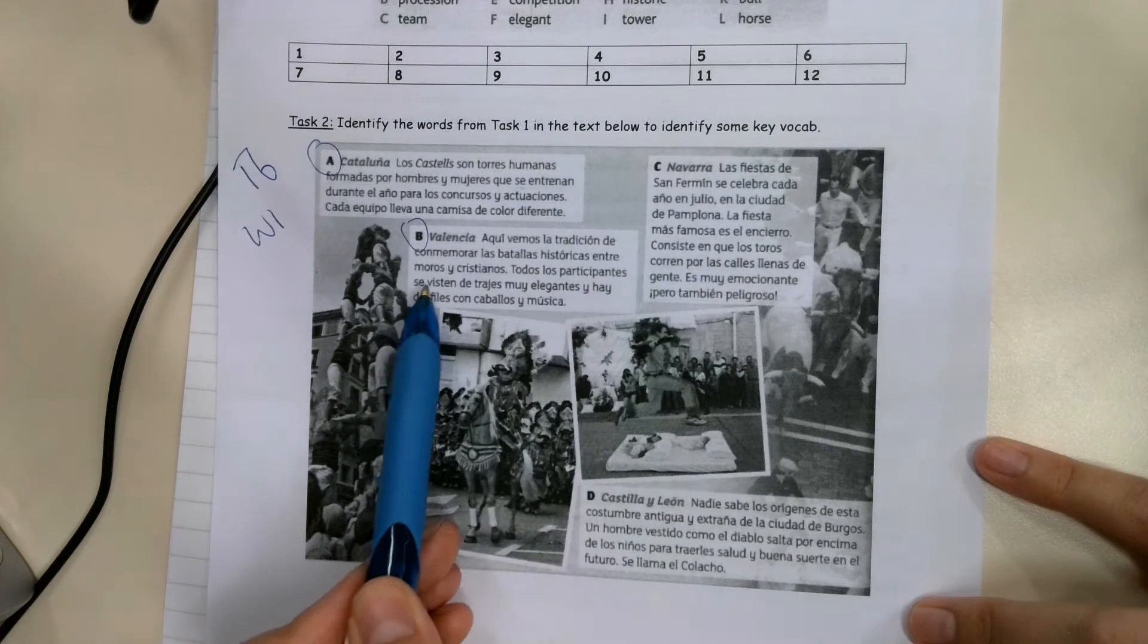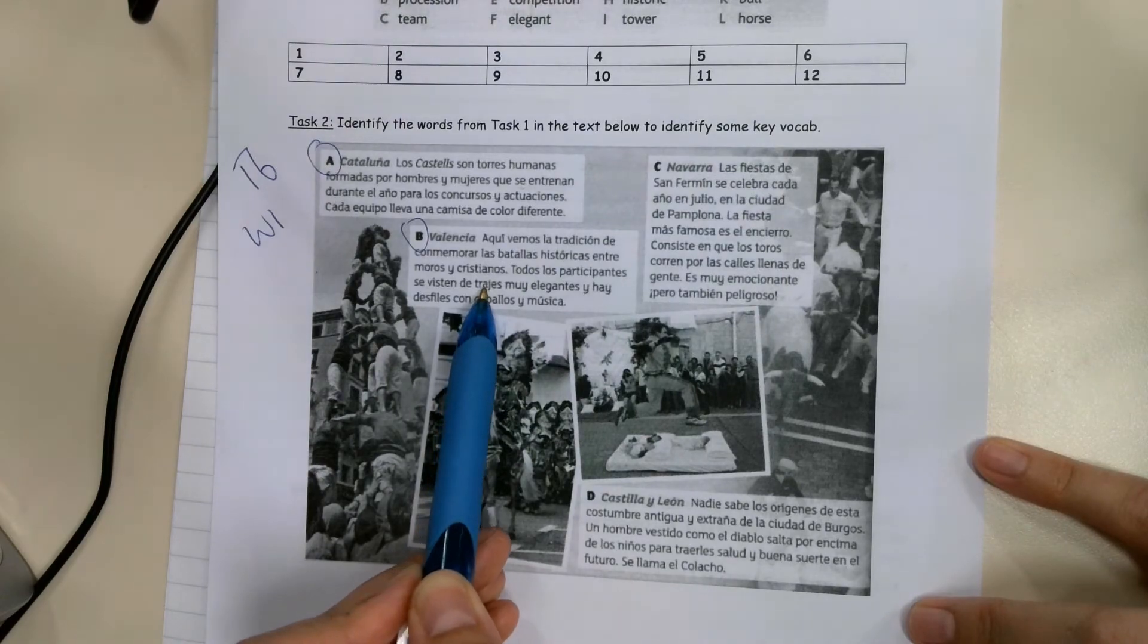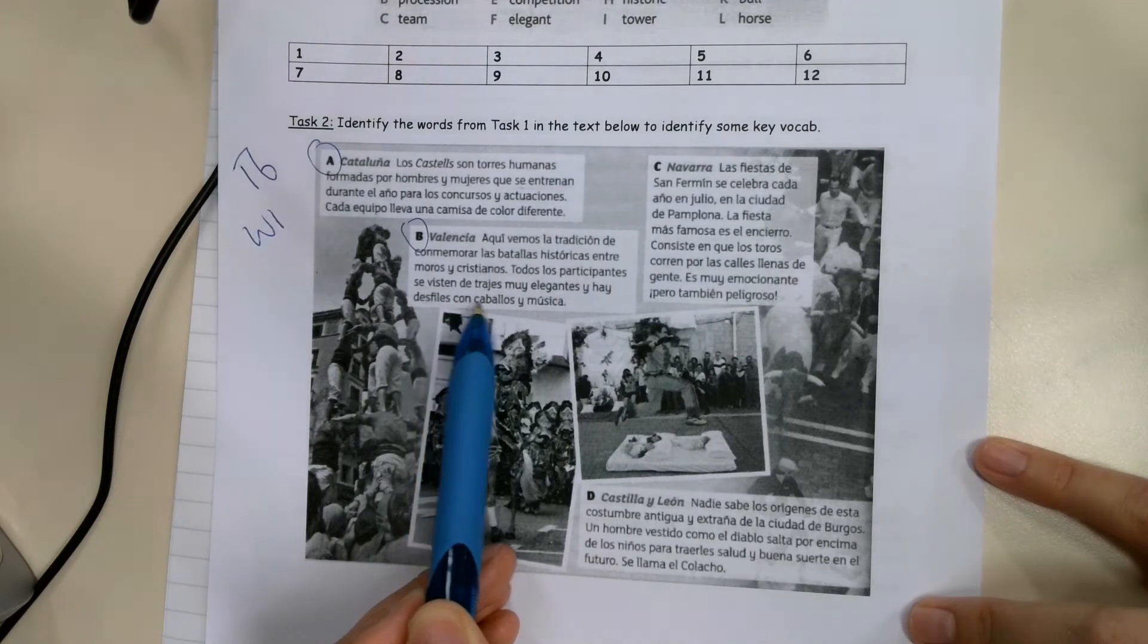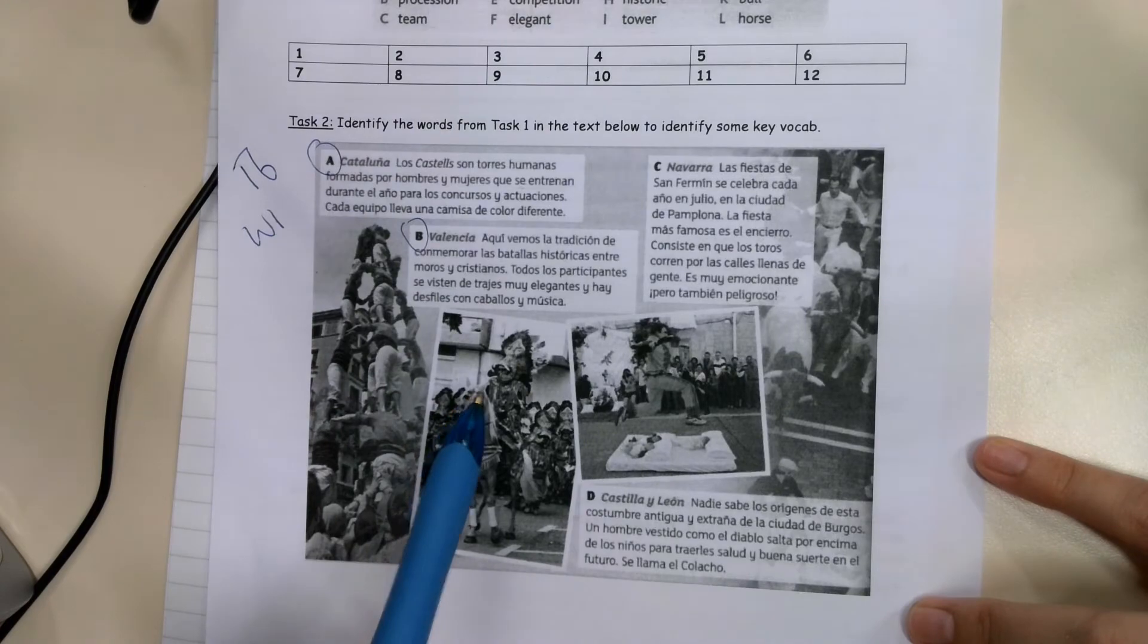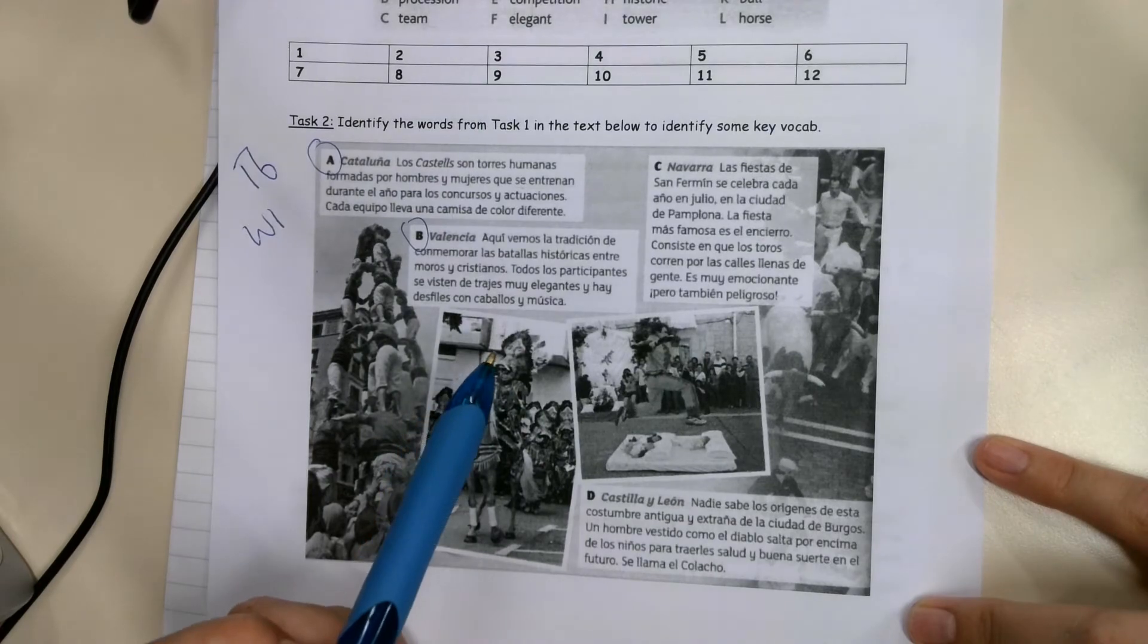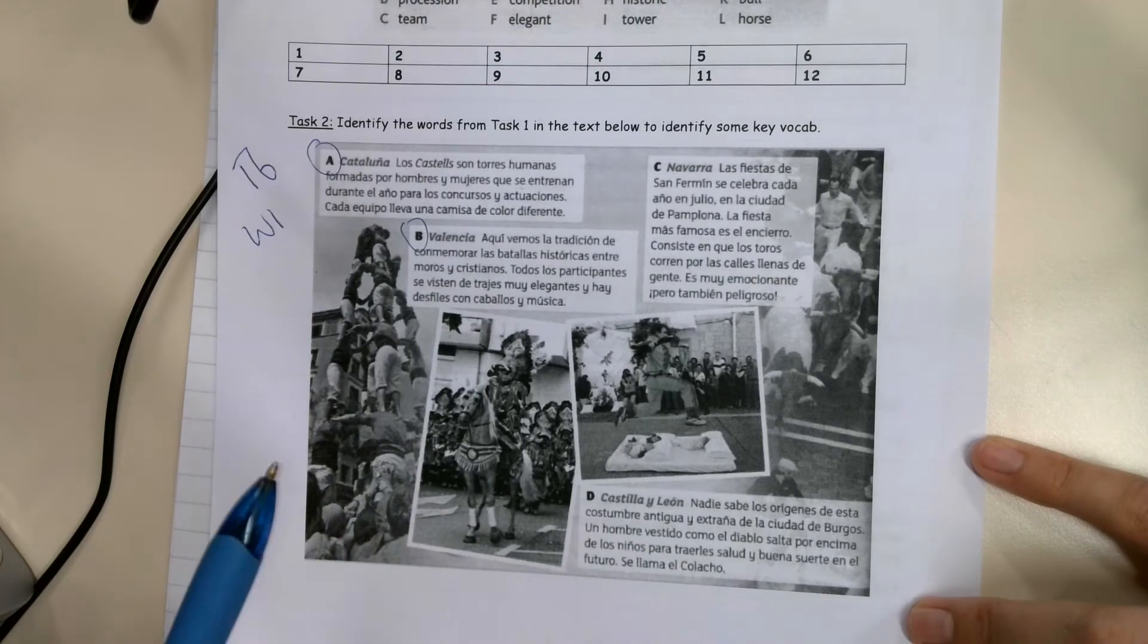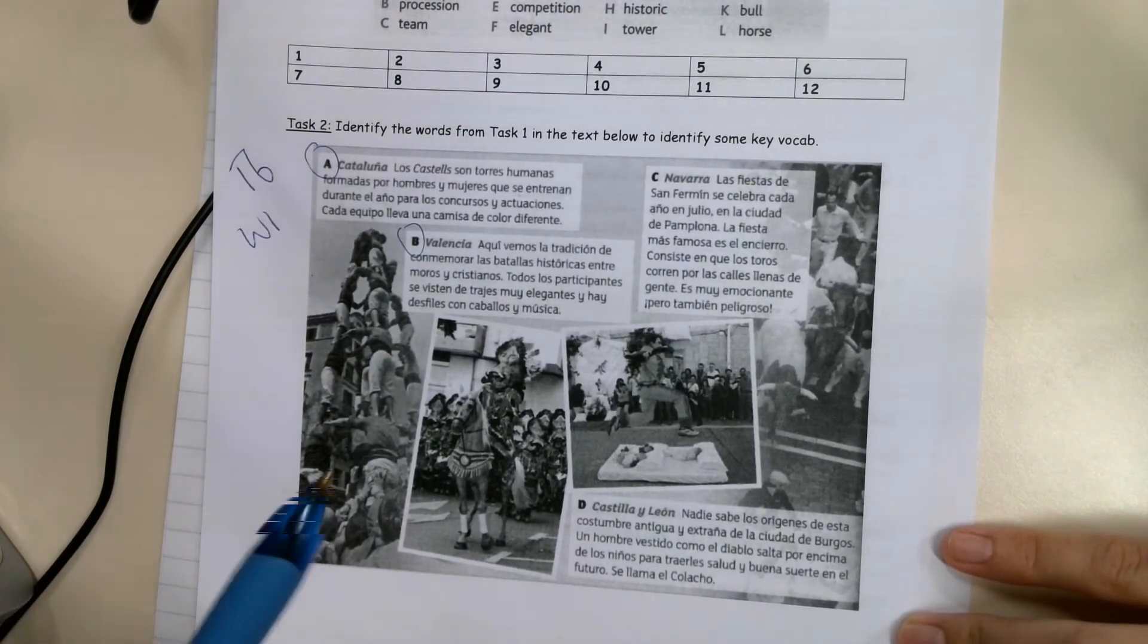Because Spain is traditionally a Catholic country, the Catholics took over from the Moors. All the participants dress in very elegant suits and there are parades with horses and music. I'm just going to pause here. As I go through this, if there's any vocab that you've discovered that I've talked about that you didn't know before, please can you write that down somewhere useful where you'll be able to refer to it. This vocab may come up over and over in exam practice, and you will need to know this vocab.